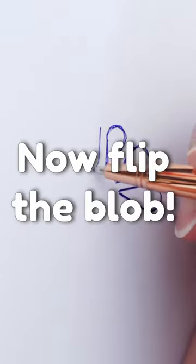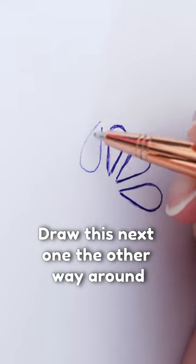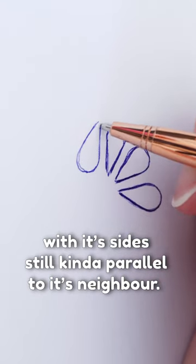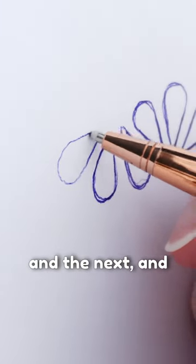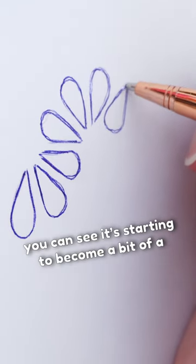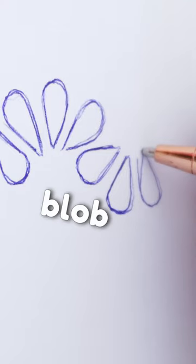Now flip the blob. Draw this next one the other way around with its sides still kind of parallel to its neighbor. Draw the next one and the next, and you can see it's starting to become a bit of a wavy pointy blob line.